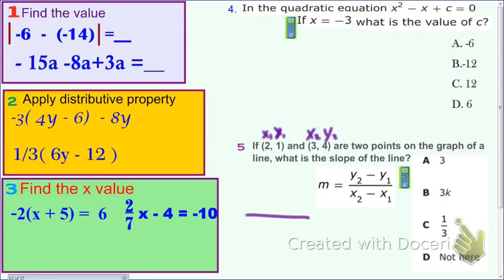So Y2 is here, 4. Y1 is here, 1. X2 is here, 3 minus X1 is here, 2. This is rate of change. 4 minus 1 is 3. 3 minus 2 is 1. 3 divided by 1, which is 3. What is the answer? A.